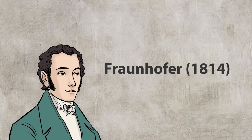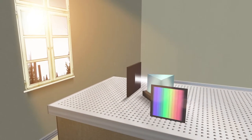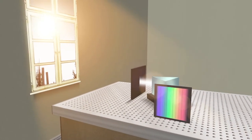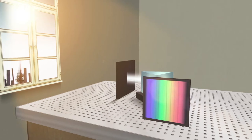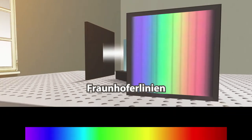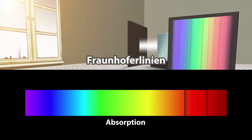Joseph von Fraunhofer used a similar setup to study the spectrum of sunlight. He discovered dark lines in the color spectrum. Today, we call those lines Fraunhofer lines. Apparently, specific frequencies in the solar spectrum are absorbed before they reach the Earth.